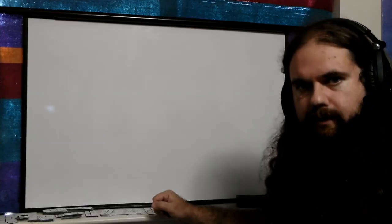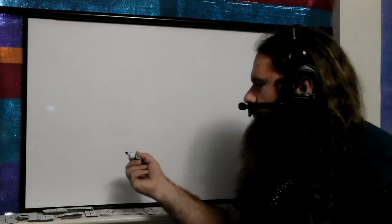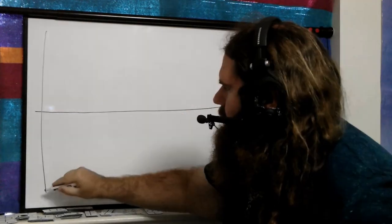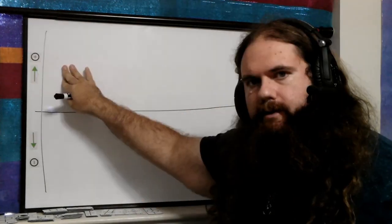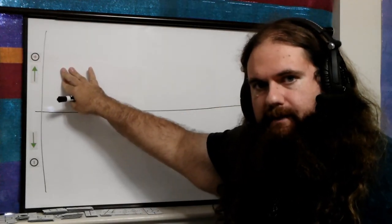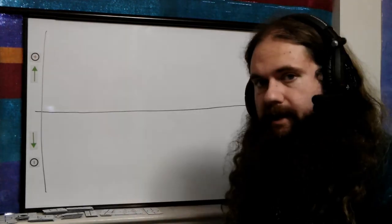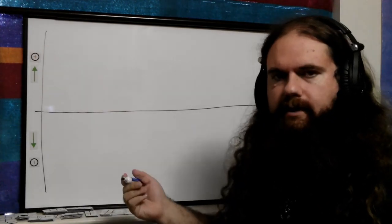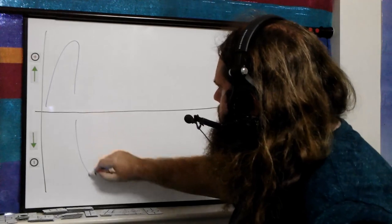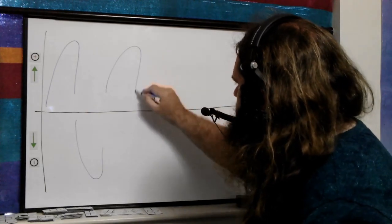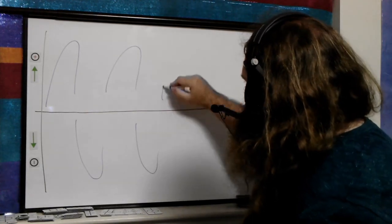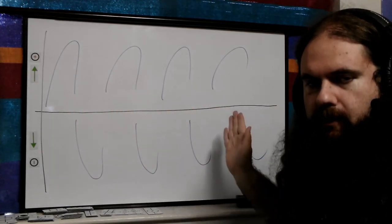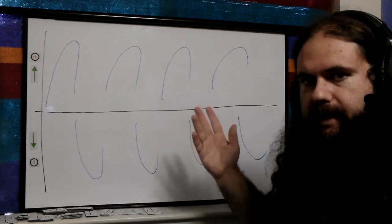Think about a graph of voltage over time. You have one axis which is time and one axis which is voltage. Up on this side is positive voltage and down on this side is negative. You might have your alternating current that goes between positive and negative — this would be voltage changing over time, this could be a signal.